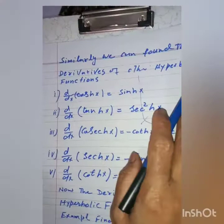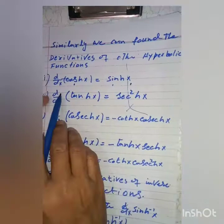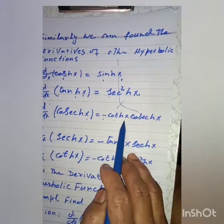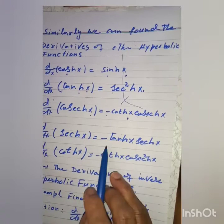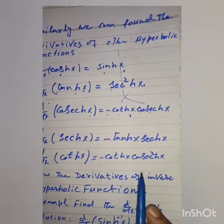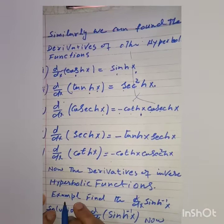Similarly we can find the derivatives of the other hyperbolic functions: d by dx of cosh x is equal to sinh x; d by dx of tanh x is equal to sech squared x; d by dx of csch x is equal to minus coth x into csch x; d by dx of sech x is equal to minus tanh x into sech x; d by dx of coth x is equal to minus coth x into csch squared x.